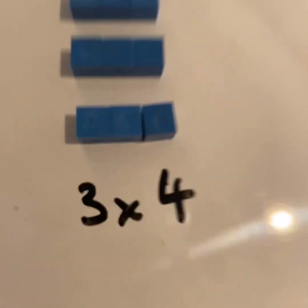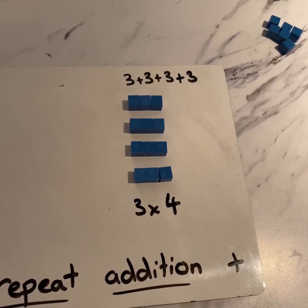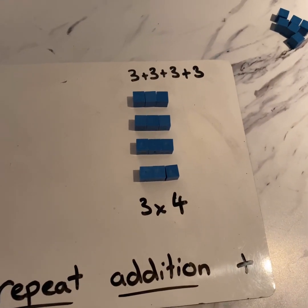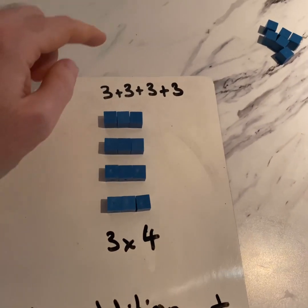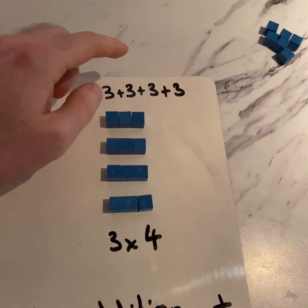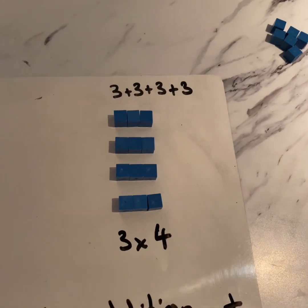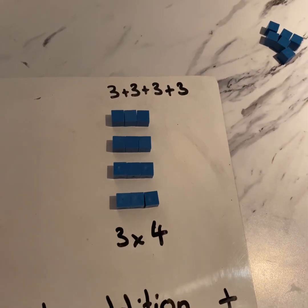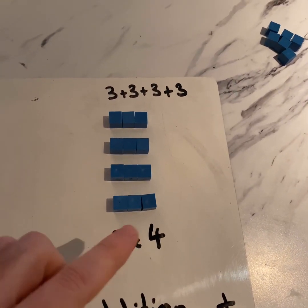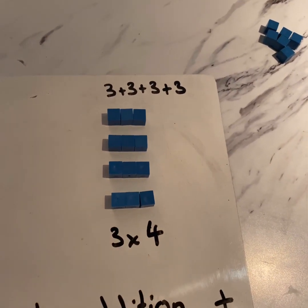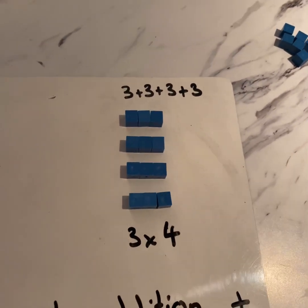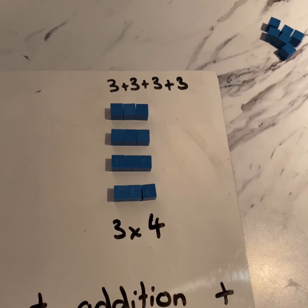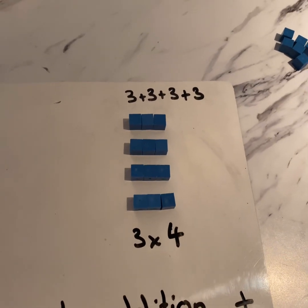Let's have a look. Does it look like that? Three add three, add three, add three — three, four times. That's kind of where the word 'times' comes into multiply.